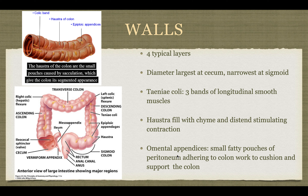The haustra are filled with chyme, which helps with digestion. When they distend, they stimulate contractions to push the contents through. There's something called omental appendices, which are small fatty pouches of the peritoneum, attached to the colon to cushion and support the structures. They are all connected to the teniae coli.